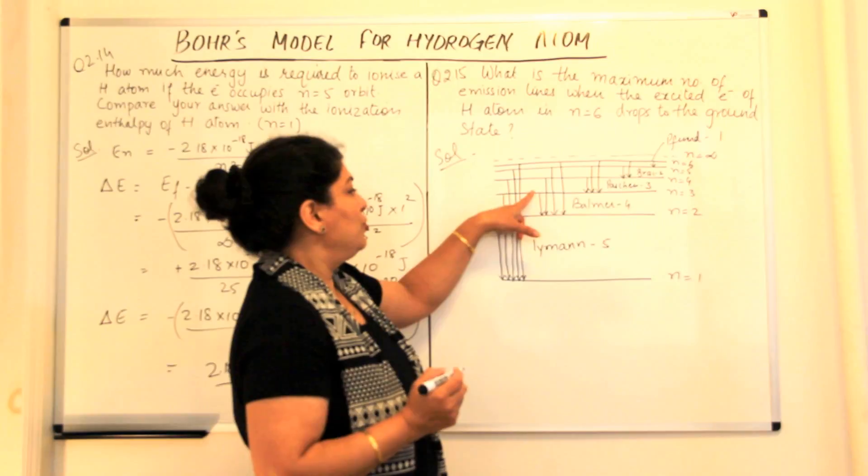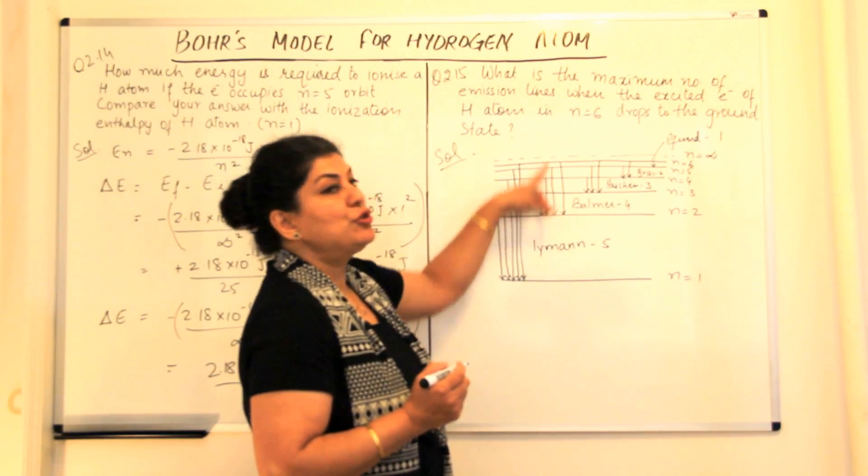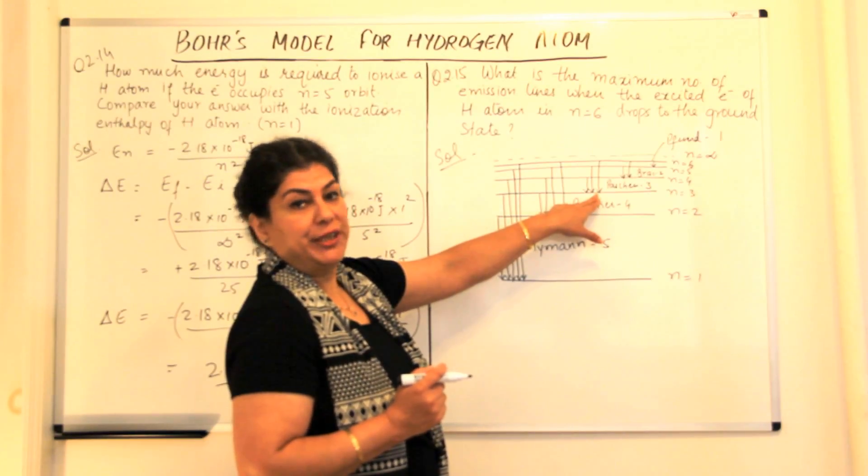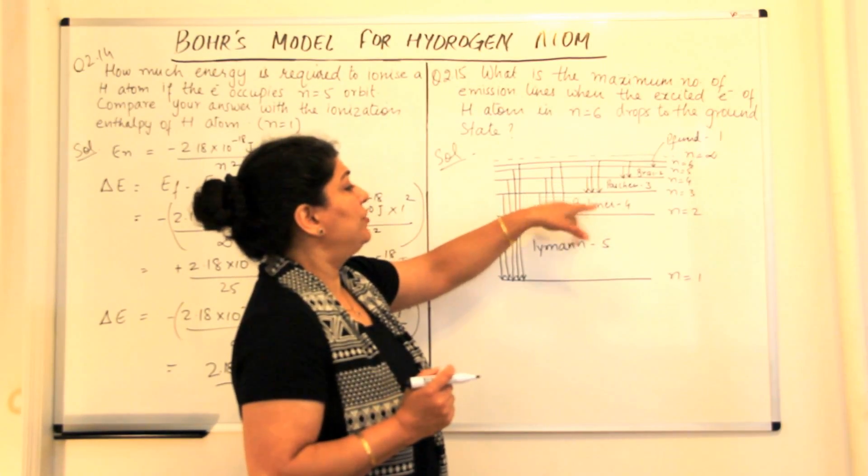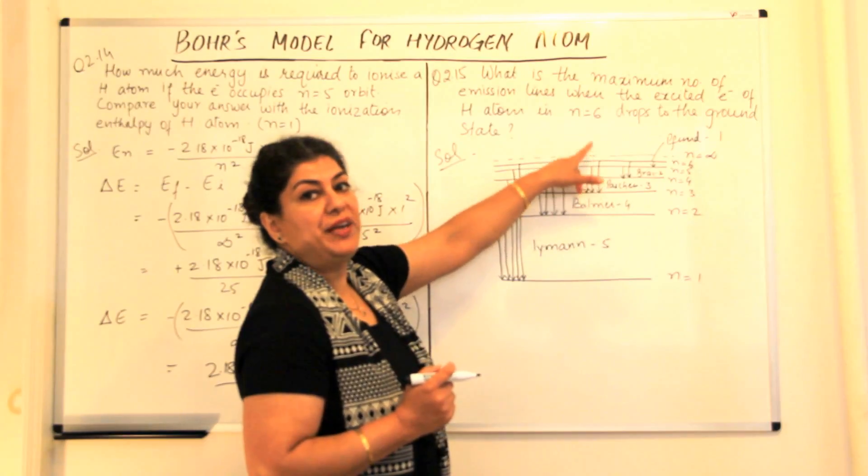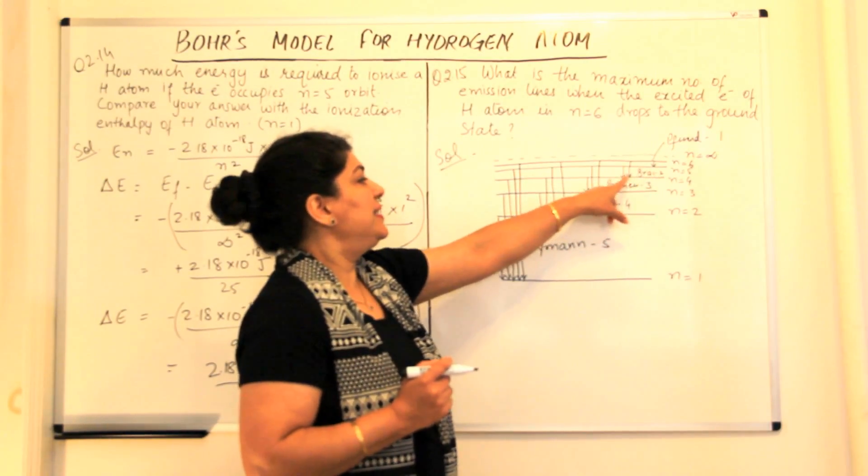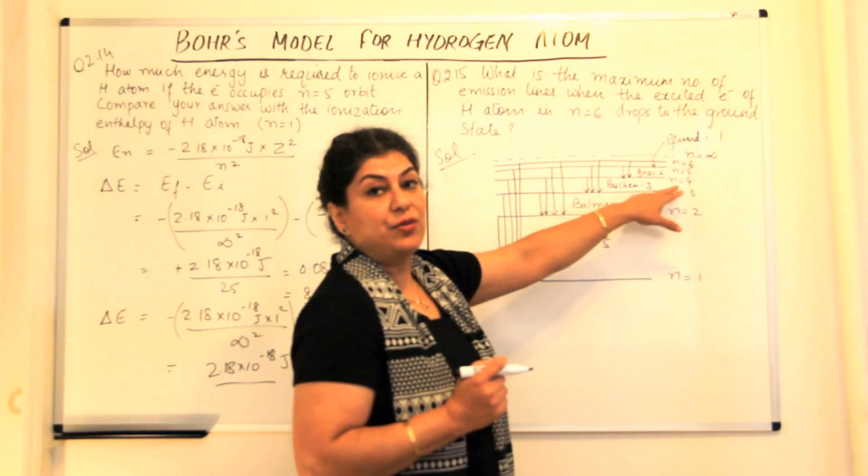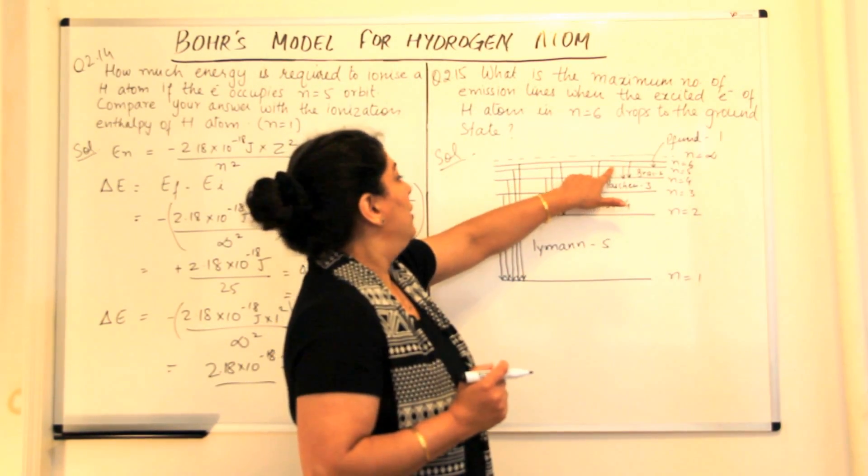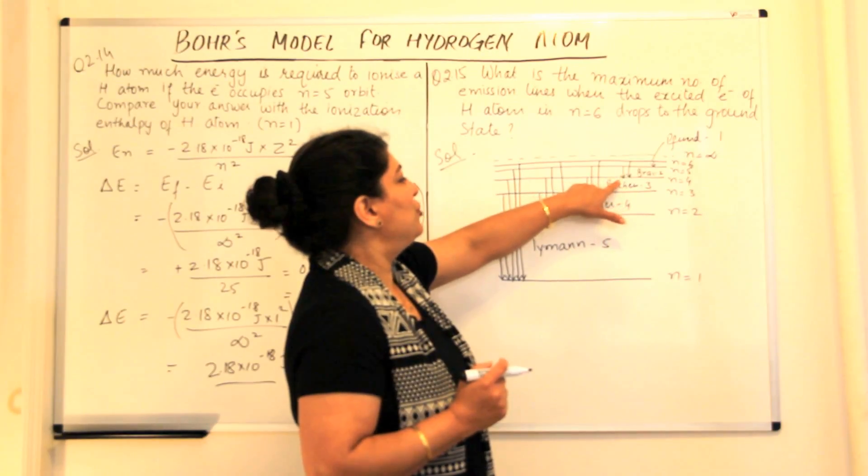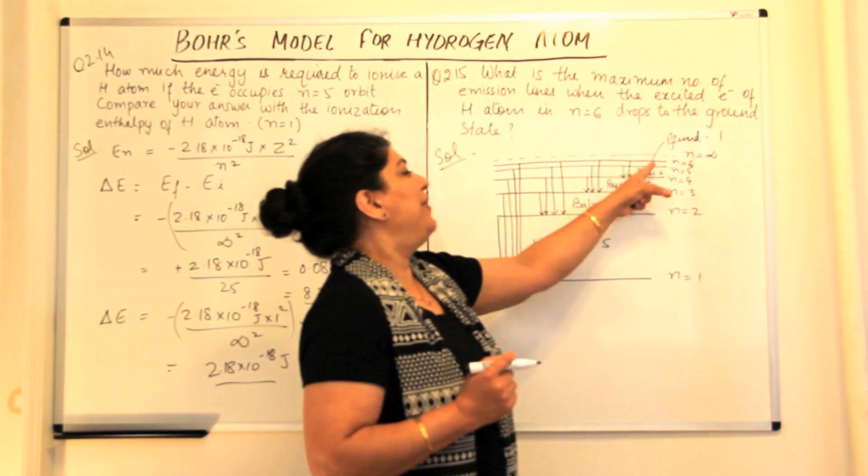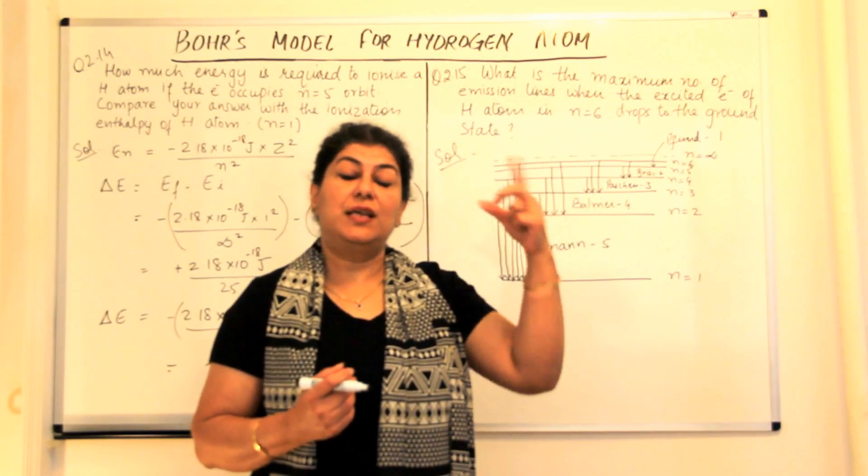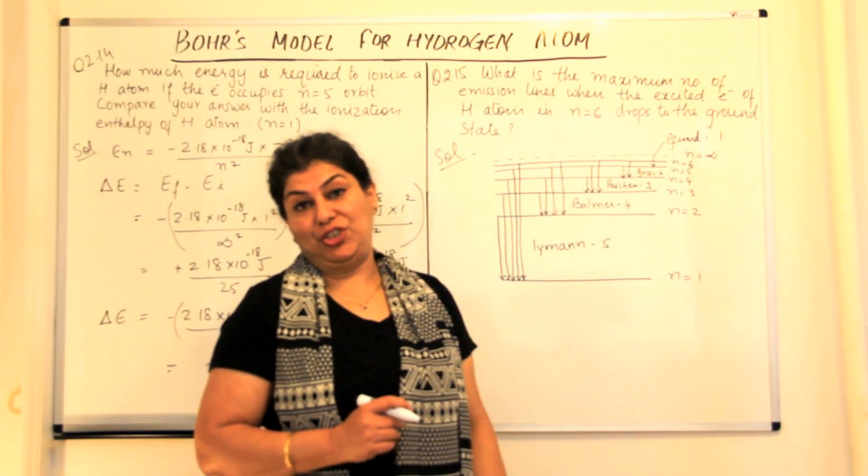When electrons jump to the second shell, we call them the Balmer series and we have four options: three to two, four to two, five to two and six to two. The Paschen series is the third shell with three options: four to three, five to three, six to three. Brackett series would have two options since Brackett has n equals four: fifth to fourth and sixth to fourth. Finally, the Pfund series is where the electron jumps from sixth shell back to the fifth shell.